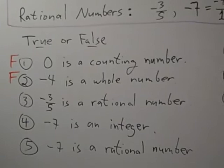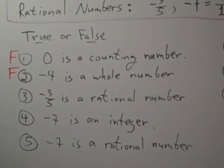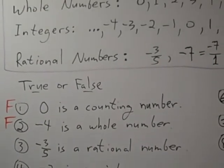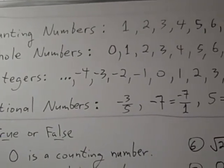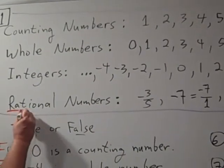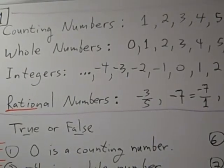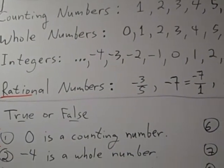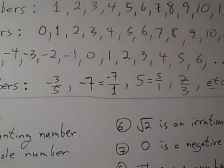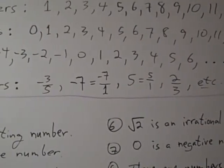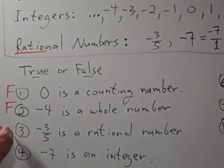Problem number 3 asks about negative 3 fifths. It says negative 3 fifths is a rational number. If you look at the rational numbers, the key thing with rational is ratio. If it can be written as a ratio of two integers, then it's a rational number. So negative 3 fifths is a rational number. This is true.